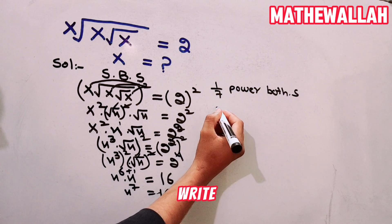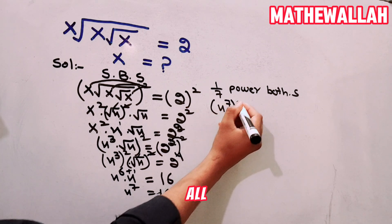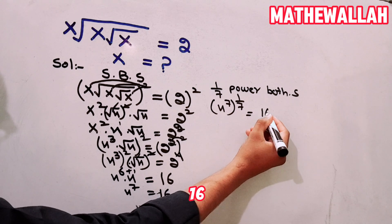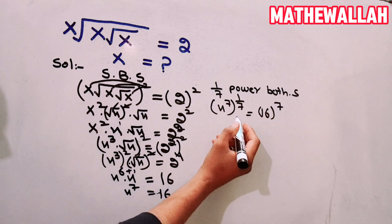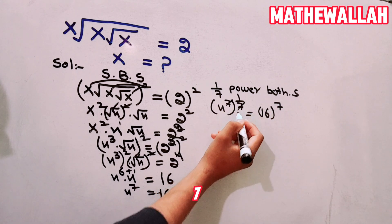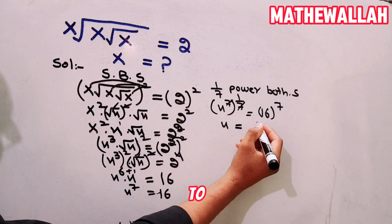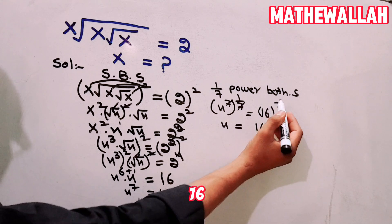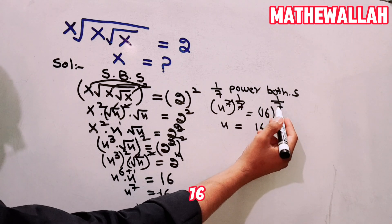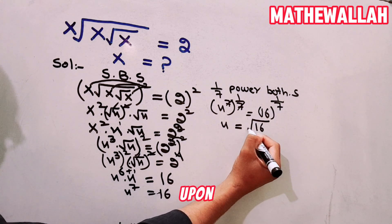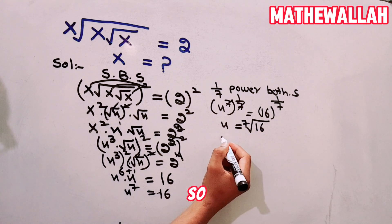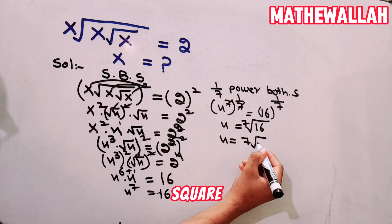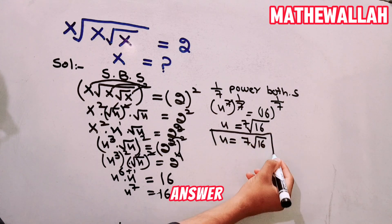So we write x power 7, whole power 1 upon 7, is equal to 16 power 1 upon 7. The x power 7 cancels, and x is equal to 16 to the power 1 upon 7, which we write as the 7th root of 16. So x equals the 7th root of 16. This is our answer.